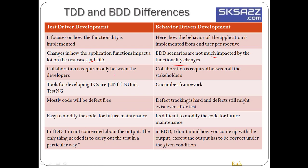In TDD, collaboration is required only between developers. In BDD, collaboration is required between all stakeholders — product owner, developers, QA, and other stakeholders — where feedback is given every sprint. Tools for TDD include JUnit, NUnit, or TestNG. For BDD, the Cucumber framework is used, with test cases written in Gherkin language. In TDD, code is mostly defect-free because developers keep rechecking and modifying the existing code. In BDD, the chance of finding a defect in UAT or production is possible, but the product has more quality than in TDD.